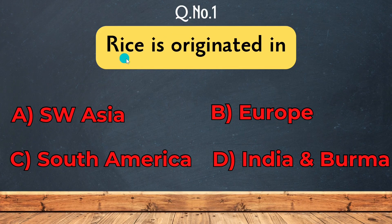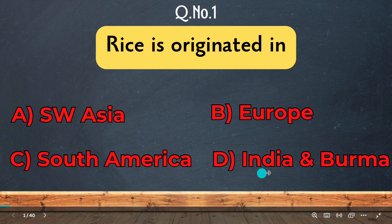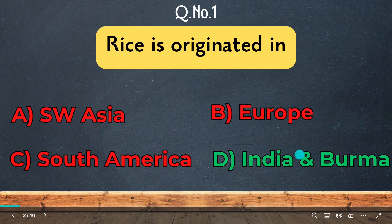Question 1: Rice is originated in — option A: South West Asia, option B: Europe, option C: South America, option D: India and Burma. The correct answer is India and Burma. Rice is originated in India and Burma.